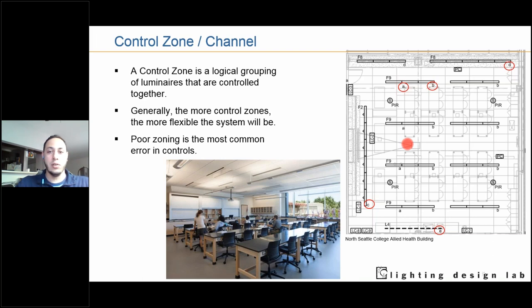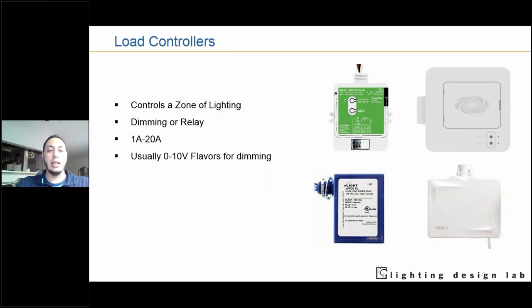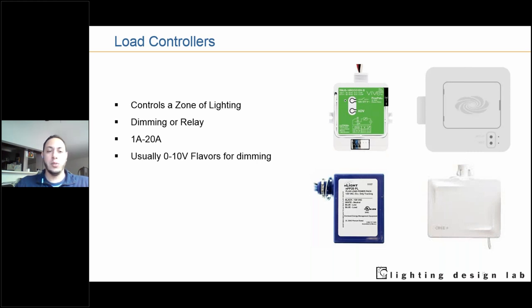Load controllers are the devices that control a zone in zone-based network lighting control systems — for non-luminaire level lighting control applications. They come in many flavors; the most common for dimming is a 0–10 volt dimming load controller. They respond to all other system inputs such as wall stations, time clock events, and sensors. Load controllers range from 1 amp controlling just one or a couple of fixtures up to 20 amps for controlling a large open office.